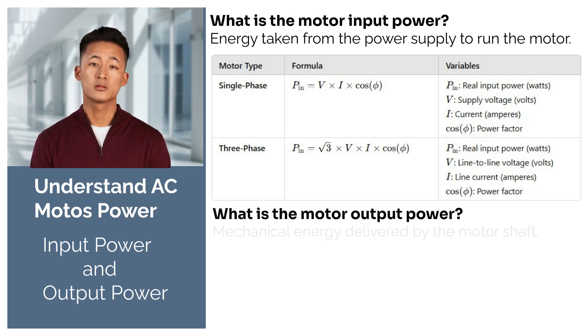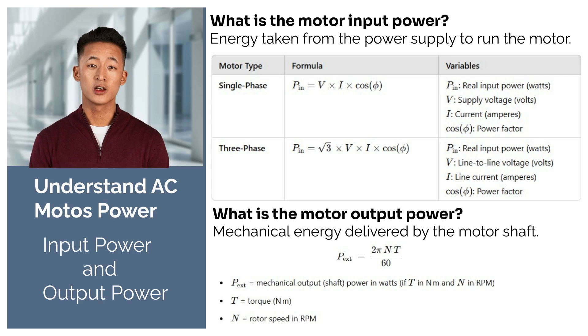Motor output power. Output power is the mechanical energy the motor delivers through its rotating shaft. It's called output power because it's what the motor gives out to do work, like turning a fan or moving a conveyor belt.